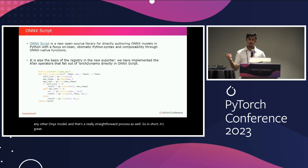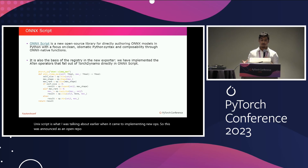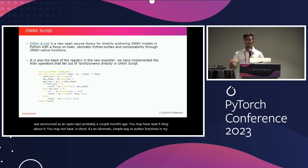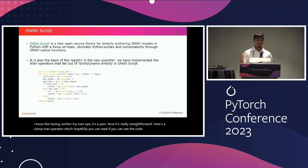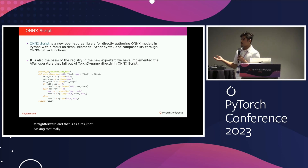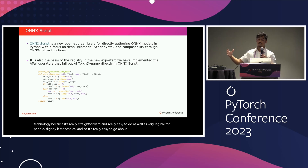ONNX Script is what I was talking about earlier when it came to implementing new ops. This was announced as an open repo a couple of months ago. In short, it's an idiomatic, simple way to author functions. When you're working with ONNX previously, it was a really challenging thing to do — having written my own ops, it's a pain. Now it's really straightforward. Here's a clamp max operator which you can see is somewhat straightforward code — that's a result of ONNX Script making it easy. It's also the basis of the registry of the new exporter, so all the ops we wrote in Dynamo were through ONNX Script. You can also directly author ONNX models entirely using ONNX Script if you choose.